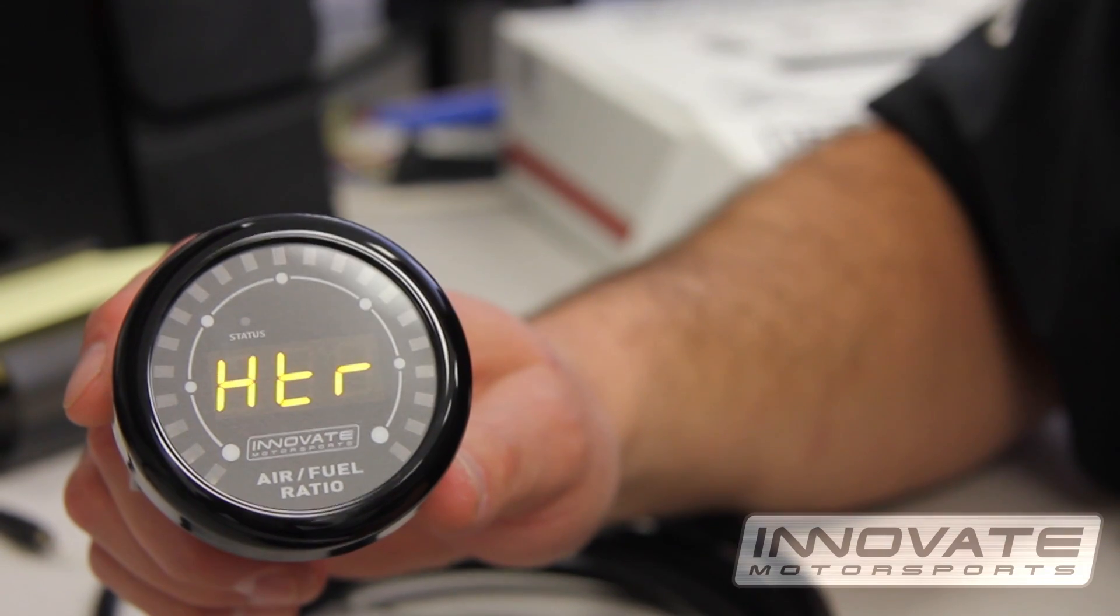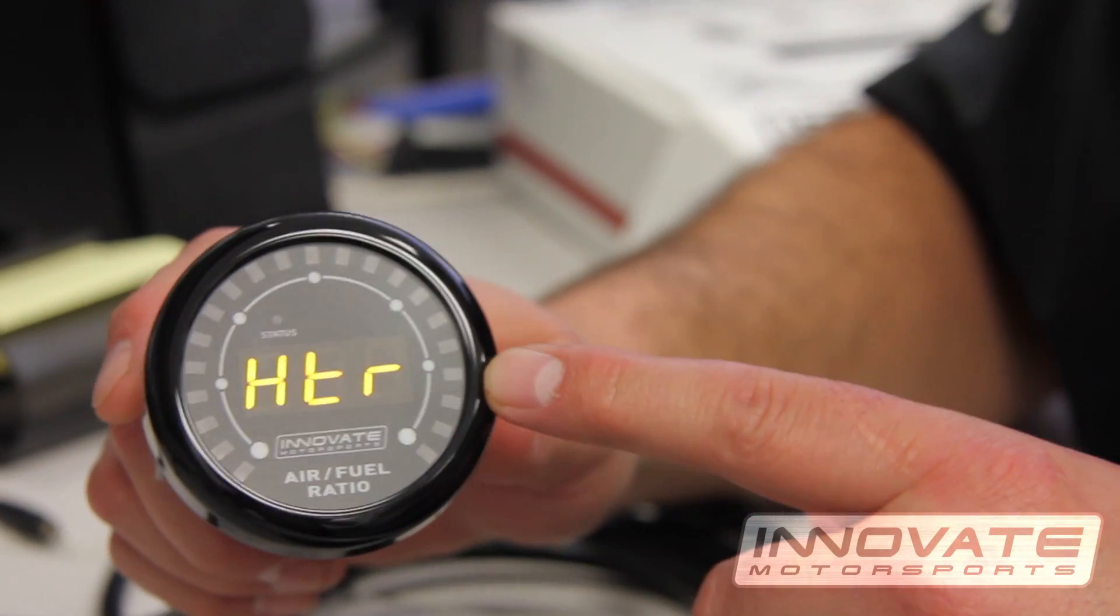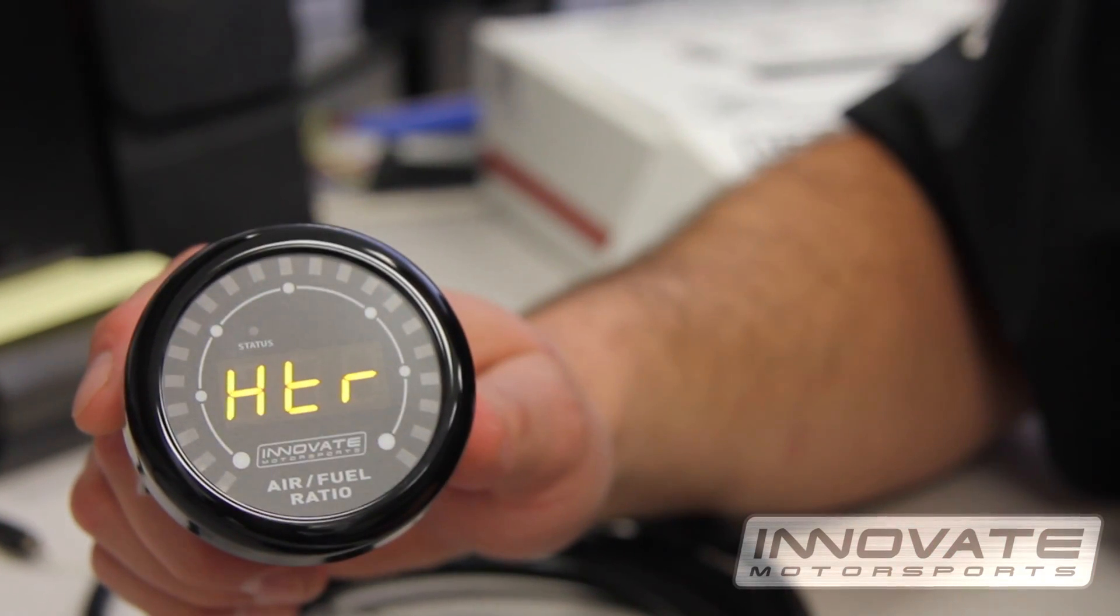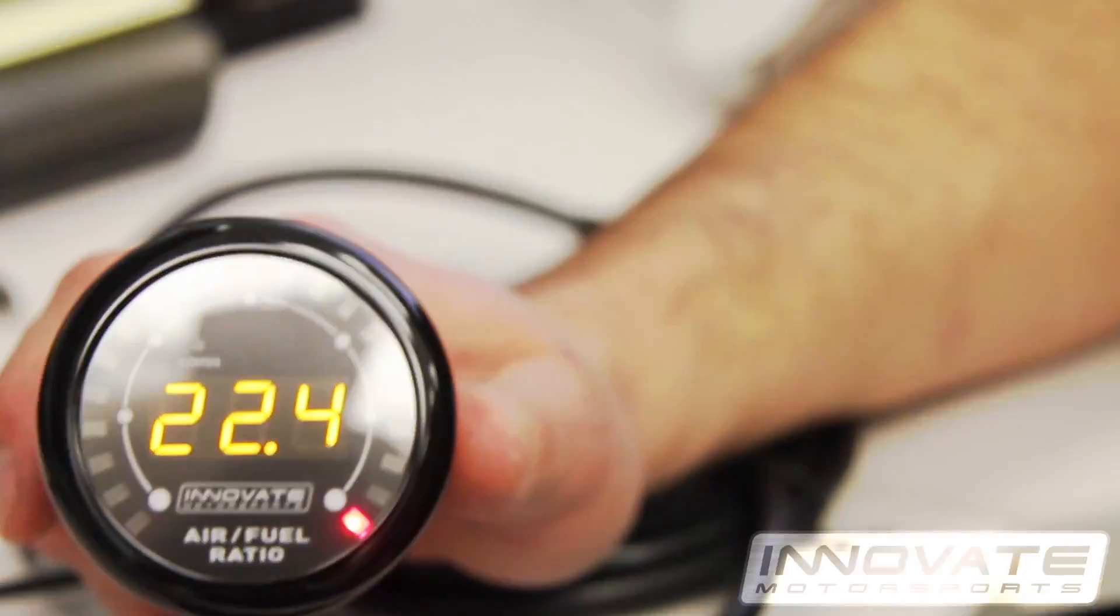Once the sensor warms up all the way you will briefly see CAL on the screen. This is displaying the sensor calibration. It's as easy as that. For more information visit the link below.